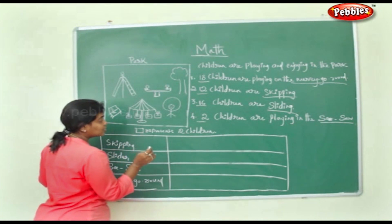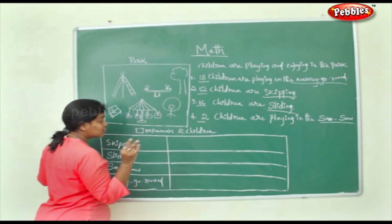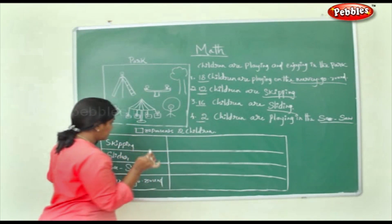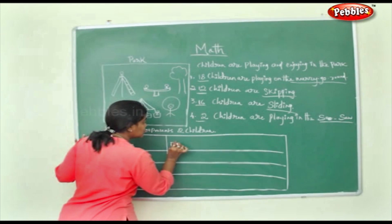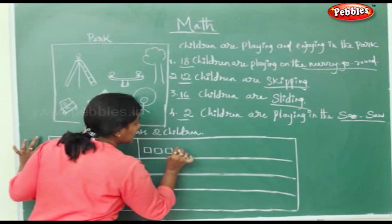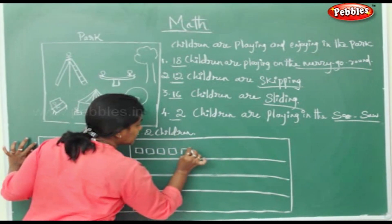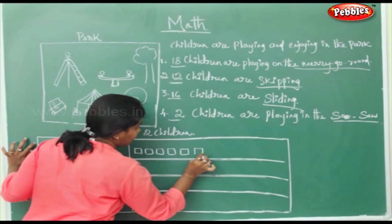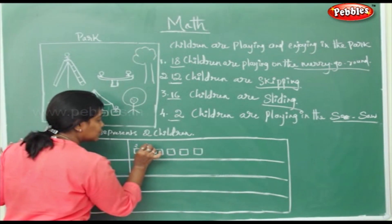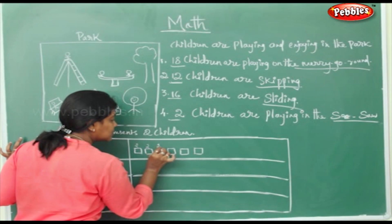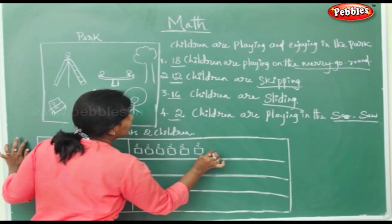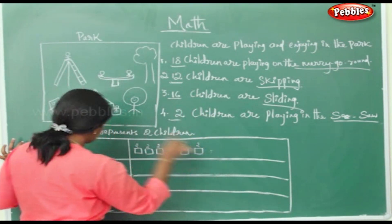First let's take skipping. Each box represents 2 children. 12 children are skipping, so we count: 2, 4, 6, 8, 10, 12 — that's 6 boxes. Why these many boxes? Because each box represents 2 children: 2, 4, 6, 8, 10, 12. In total, 12 children are doing skipping.